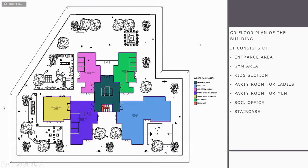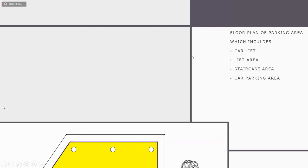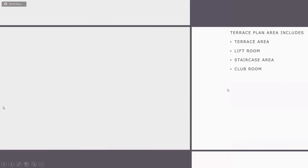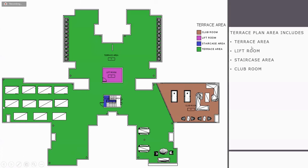The third plan is the ground floor plan, which consists of the entrance area, gym area, kids section, party room for ladies and men, and the society office, along with staircases and apartments. The parking floor plan includes the car lift shown in green, lift area, staircase area, and car parking in yellow. The terrace plan includes the green terrace area, left room, staircase area, club room, and sitting area.